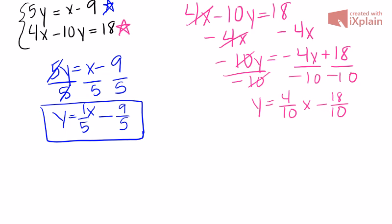Now I know I can simplify these. 2 can go into both 4 and 10. 2 goes into 4 two times, and 2 goes into 10 five times, giving us 2/5. Same thing over here. 2 goes into 18 nine times, and 2 goes into 10 five times, giving us 9/5.